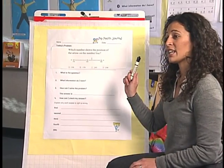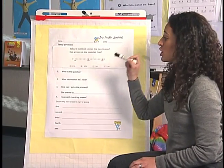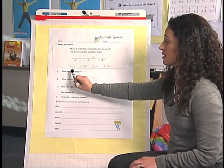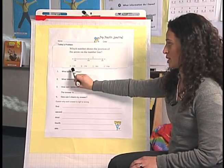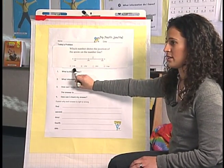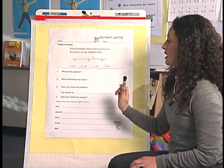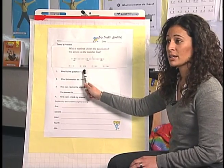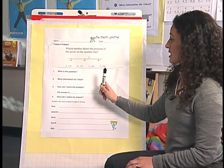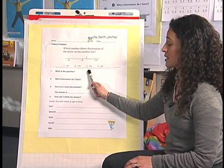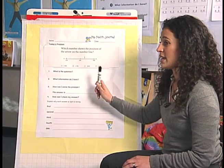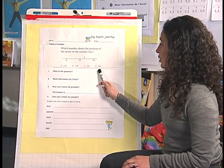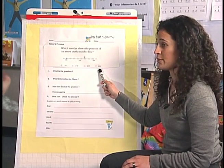The A's, I want you to look at response A. B's, I want you to look at response B. C's, I want you to look at response C. And D's, I want you to look at response D.